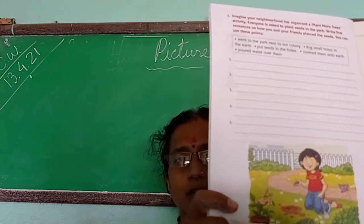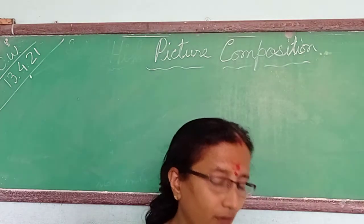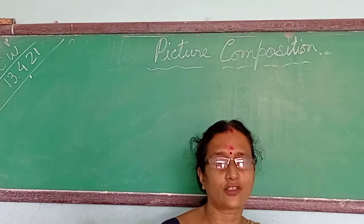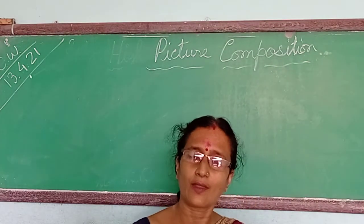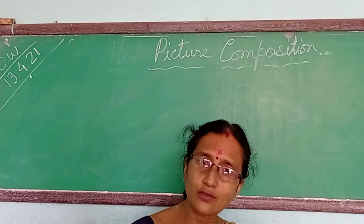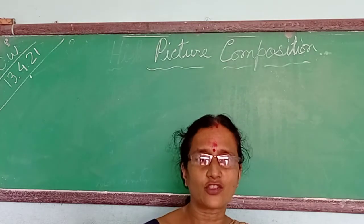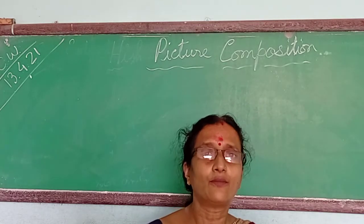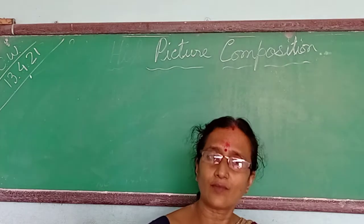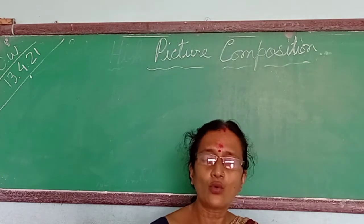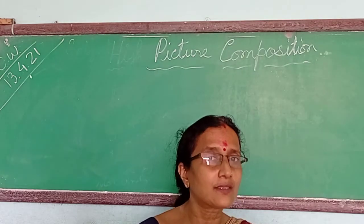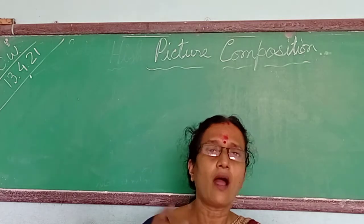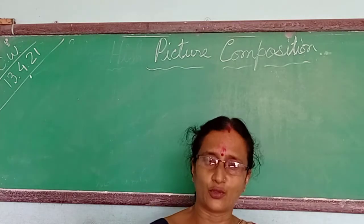This picture is in your super comprehension book, the last page, that is page 44. It is with you only. Super comprehension book, page number 44 — the picture is there. Today I will discuss about the picture and how to compose a picture composition.